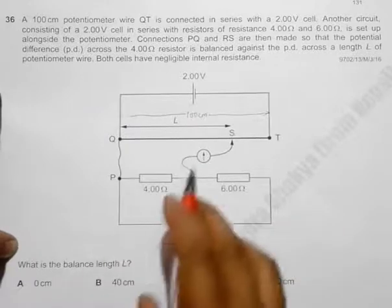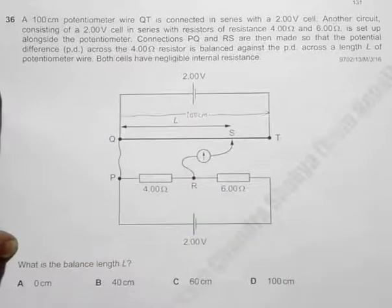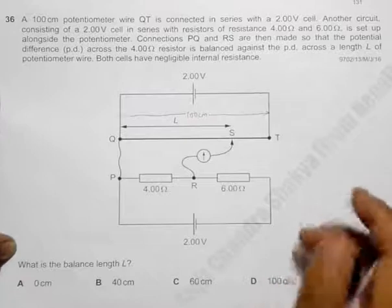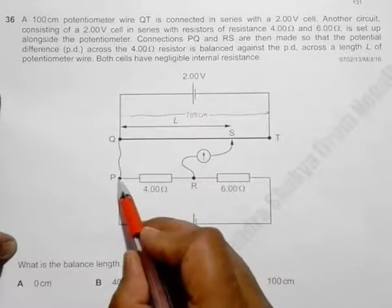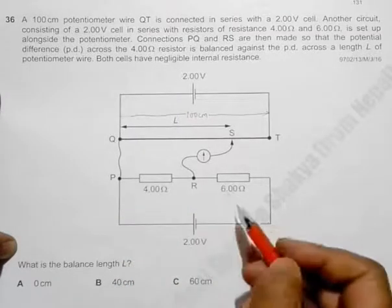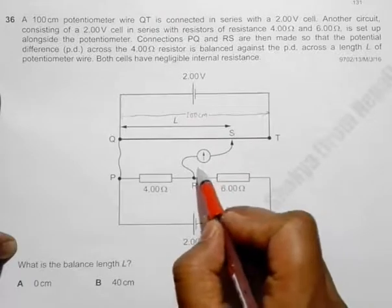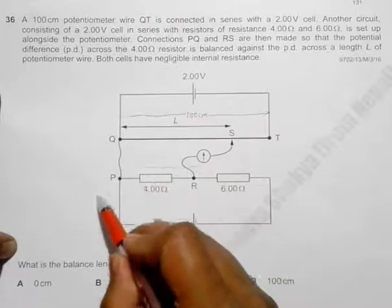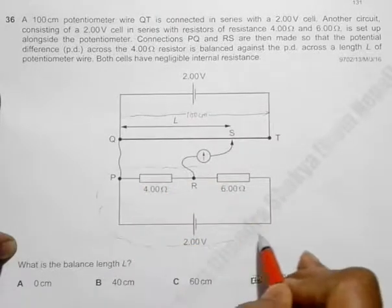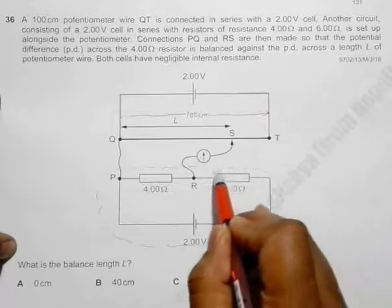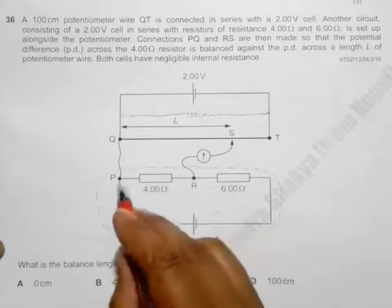We have to find this balance length L. So for this purpose, let us first find what is the value of this VPR. So we can rearrange this and find the value of VPR.